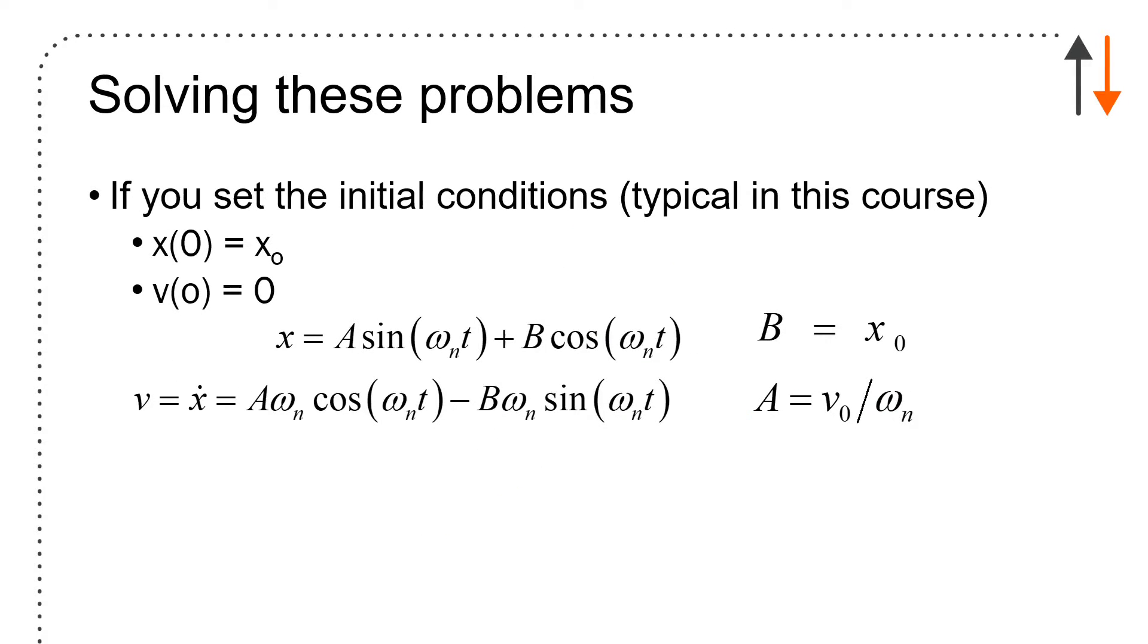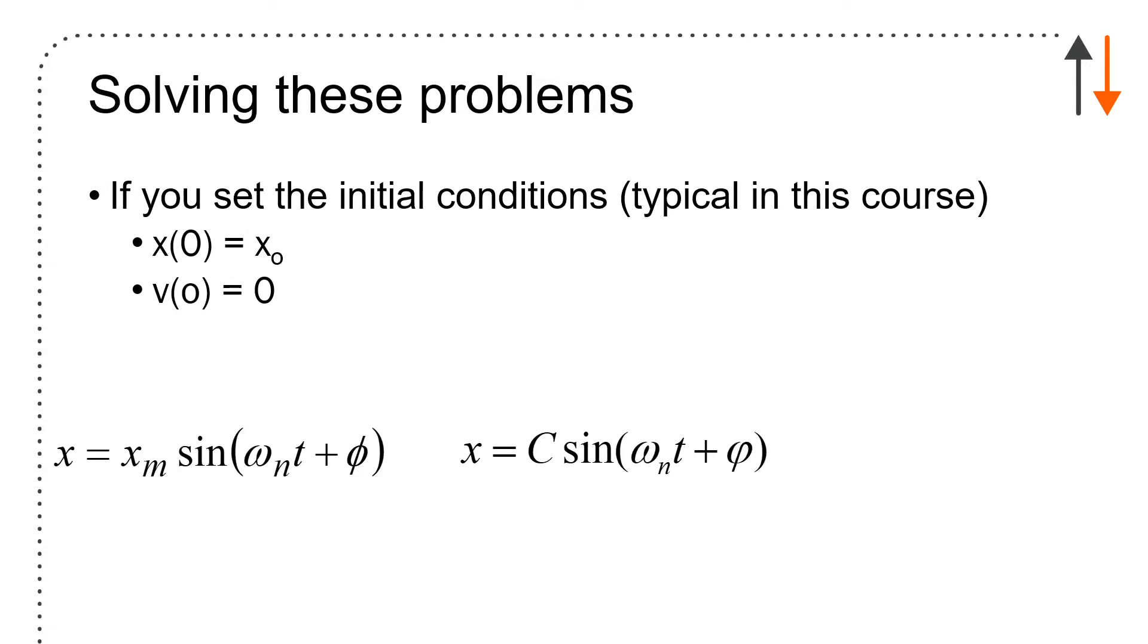What you've done to solve these problems—not really solve them, you've just set them up for solution—is have an initial displacement with a particle starting from rest. From x = A sin(omega_n t) + B cos(omega_n t), B equals x_naught because sine at time zero is zero and cosine at time zero is one, and you end up with v_naught over omega_n.